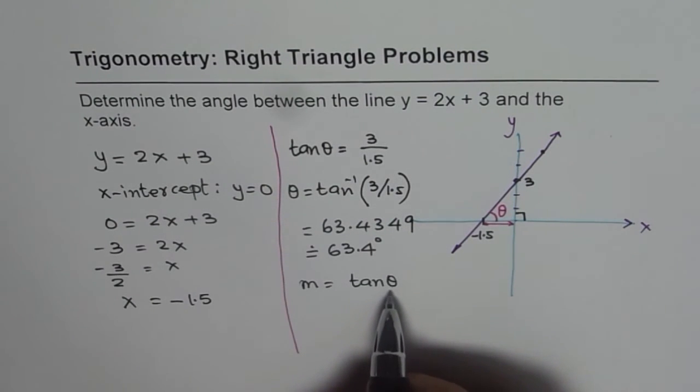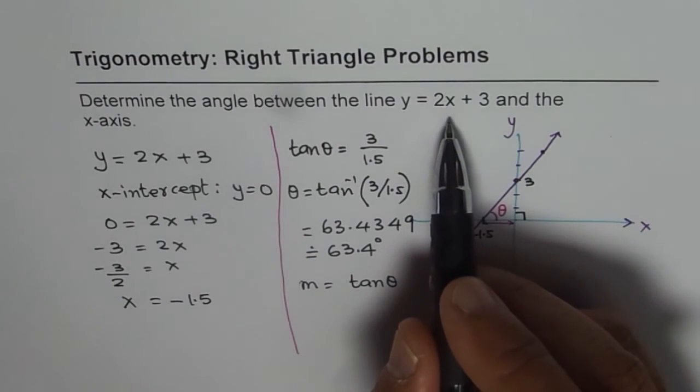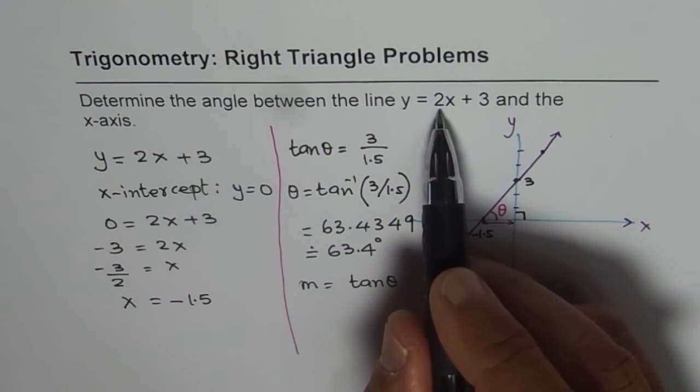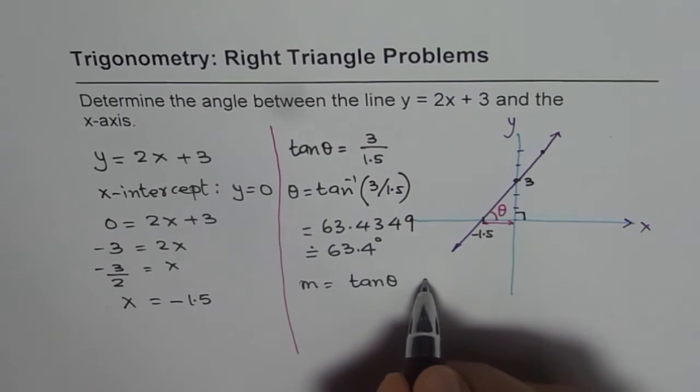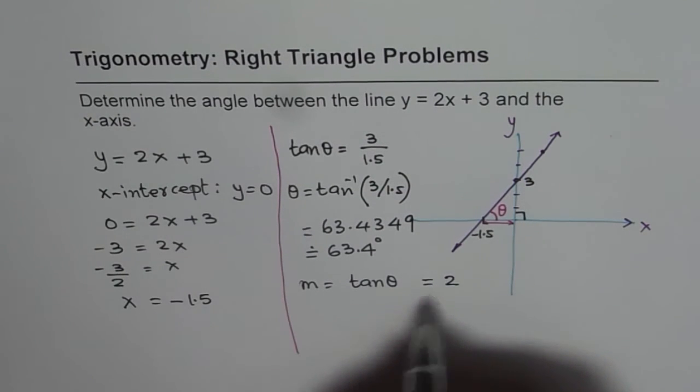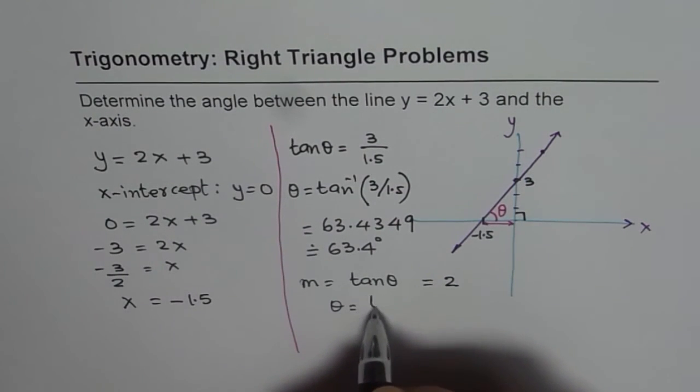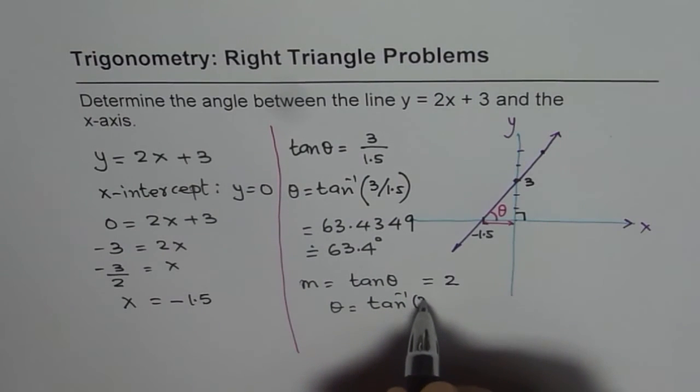The slope is 2 for us. So we can say tan theta equals 2 and theta equals tan inverse of 2. Let's calculate this value, tan inverse of 2.